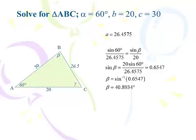γ's the only one that can possibly be obtuse because it's the largest angle. Here's your tip of the day. Never use the law of sines to find the largest angle in a triangle. So I'm not going to use the law of sines to find γ. I'm going to use the law of sines to find β. So sin 60° / 26.4575 = sin β / 20. I cross multiply, I hit inverse sine, I get 40.9 degrees there roughly, 40.8934.